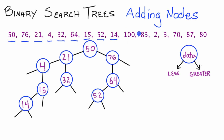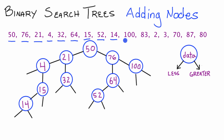Now we add the number 100. 100 is greater than 50, so we take the right pointer. 100 is greater than 76, so we take the right pointer again, and place 100 there. So there is node 100. We've added 100 to the tree.